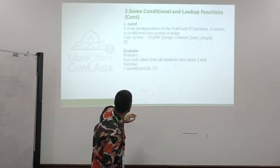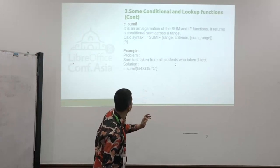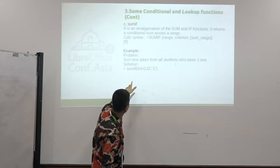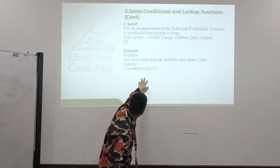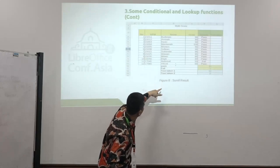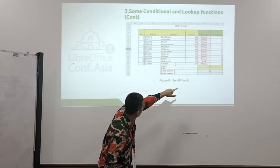This is SUMIF to sum with the condition. For example, the student who taken 1 is SUMIF, and taken 1. This is the SUMIF result, first taken 1 is 11, and first taken 2 is 2.